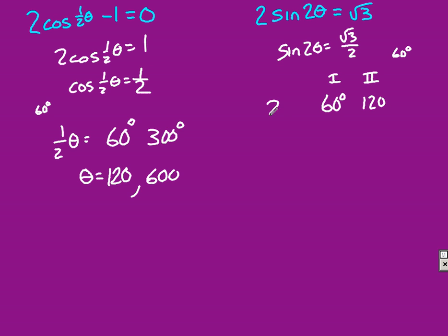So that means, to get my final answer, I need to divide everything by 2. So my answers are 30 and 60 degrees.